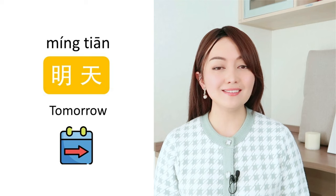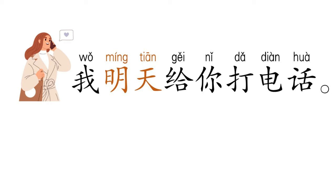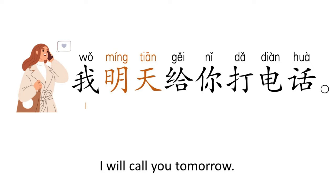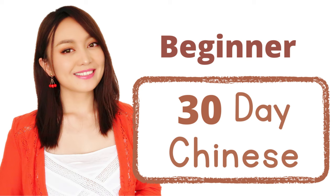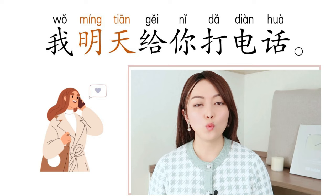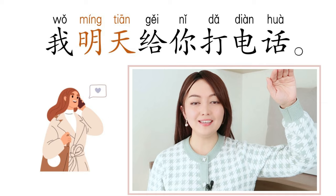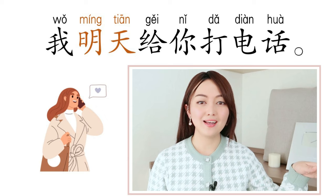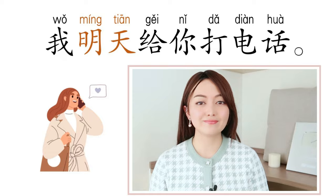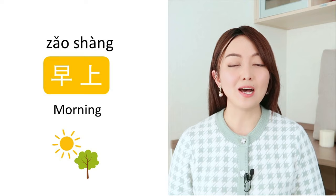我明天给你打电话 means 'I will call you tomorrow.' 我 is 'I', 明天 is 'tomorrow', 给你 means 'to you', and 打电话 means 'make a phone call.' I know the way to build a sentence is very different in Chinese, but don't worry — you will get accustomed after studying for a while. In our 30-day Chinese program I have plenty of example sentences which I break down and explain in detail. 我明天给你打电话.